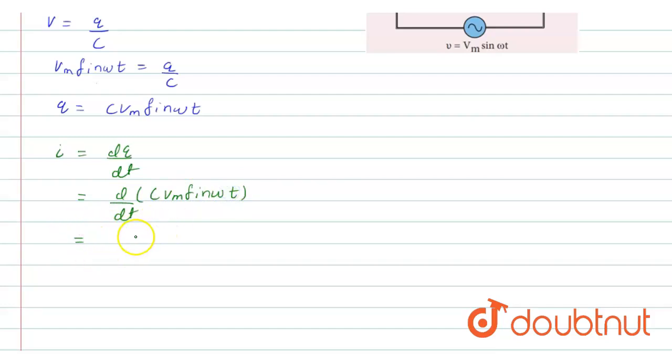By solving this, what we get is C ω vm cos ωt. So we can write this as C ω vm sin(ωt + π/2).